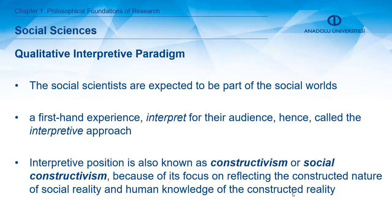As a result of this criticism, scientists came up with a new paradigm: the qualitative interpretive paradigm. Scientists in social sciences wanted to be part of the social world, have first-hand experience, interpret individuals, and make comments on the meanings those individuals attach to phenomena. This interpretive position became known as constructivism or social constructivism, because of its focus on reflecting constructed meaning in social sciences.